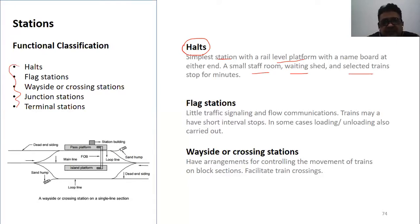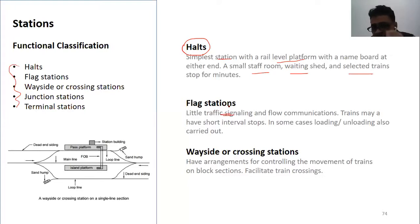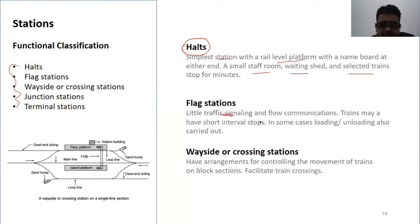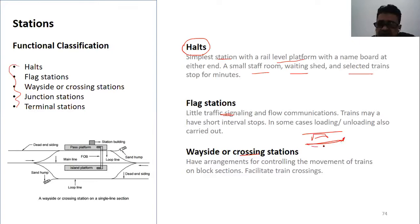Then we have flag stations, which have little traffic and basic signalling with close communications. There is a signal — like a white flag — just at the end of the station area. Passengers have to wait there. Then there are wayside and crossing stations, where you sit on one train and the other train passes on the other side — that is called a crossing station.